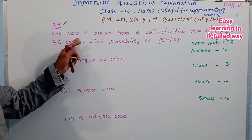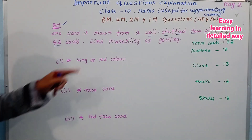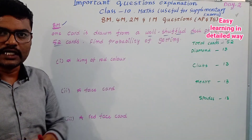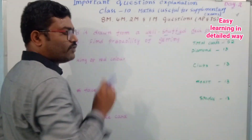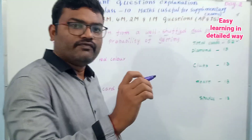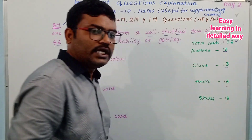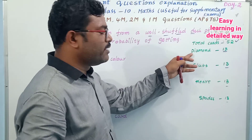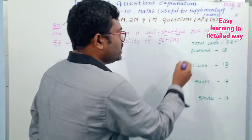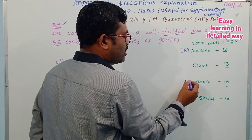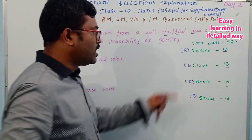See the question here: one card is drawn from a well-shuffled deck of 52 cards. Find the probability of getting — see, deck of cards, total 52 cards. Out of 52 cards, there are 4 suits of 13 cards each: 13 times 4 equals 52. The suits are diamond, spade, club, and heart. Diamond and heart are red-colored, and spade and club are black overall.